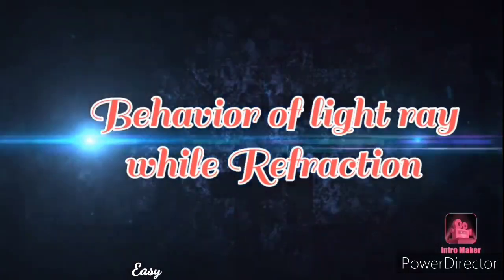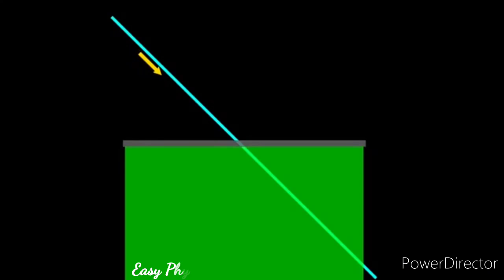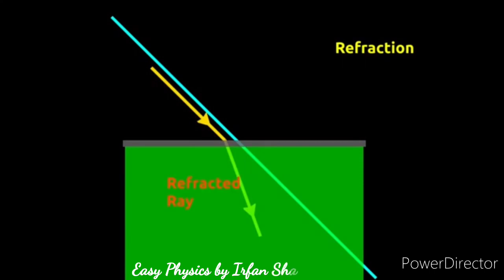Behavior of Light Ray During Refraction. When a light ray is travelling from one medium to another, it doesn't travel in the same direction. It bends. This is called refraction and the bent ray is called a refracted ray.